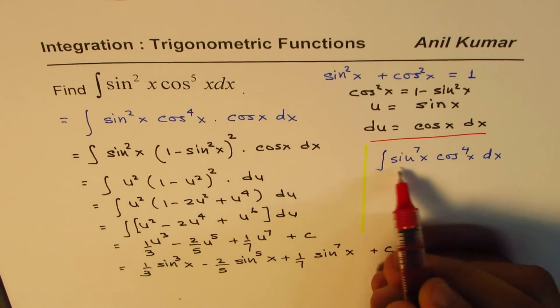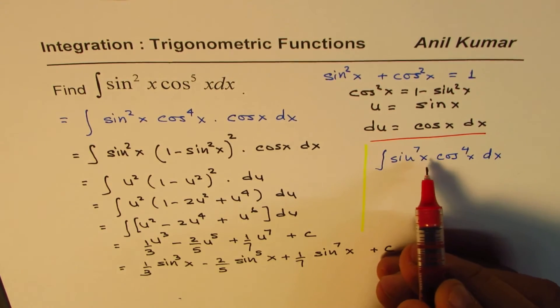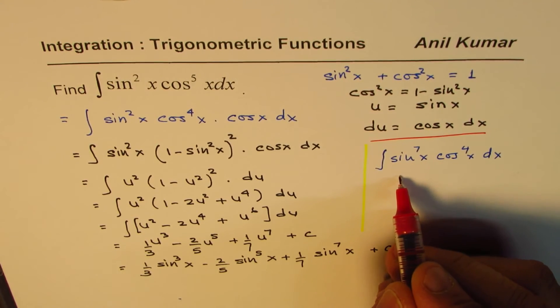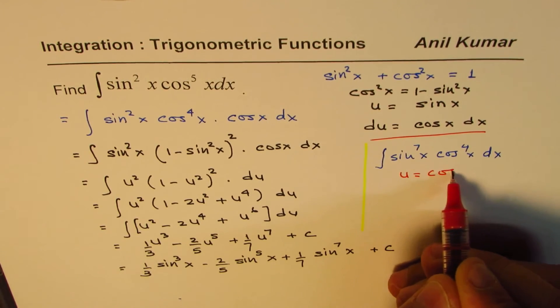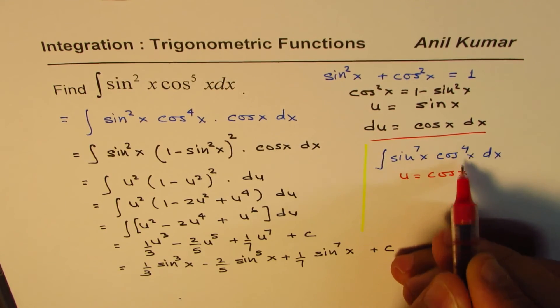Now here, since we have odd power of sine, we will keep sine aside, so that means the substitution should be u equals to cos x. That's the even power.